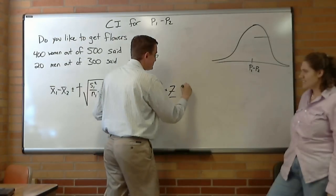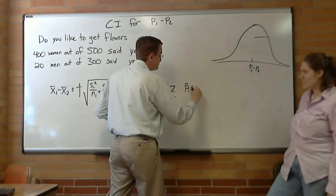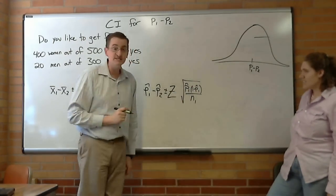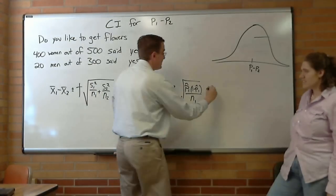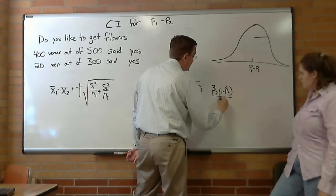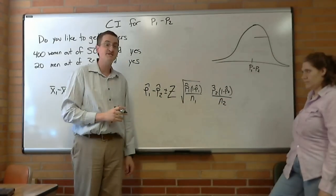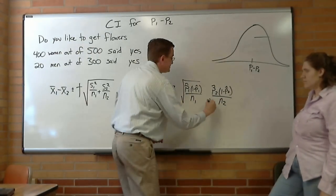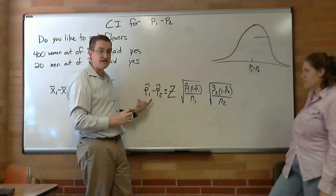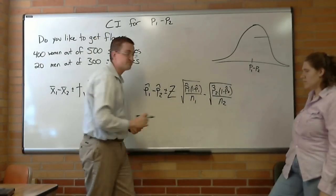What is it going to be? Well, you would think p hat 1, 1 minus p hat 1, over n1, square root. That's the standard error for the first group. And p hat 2, 1 minus p hat 2, over n2, that's the standard error for the second group. Oh, I need the square root. And because we're subtracting right here, we might be tempted to subtract right here.